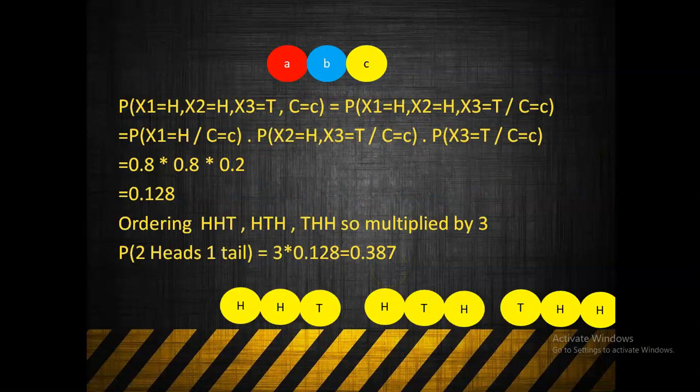For coin C: the head probability is 80%, so P(H) = 0.8, P(H) = 0.8, P(T) = 0.2. Multiplying gives 0.8 × 0.8 × 0.2 = 0.128. For two heads and one tail with three arrangements, the total probability is 0.128 × 3 = 0.384.